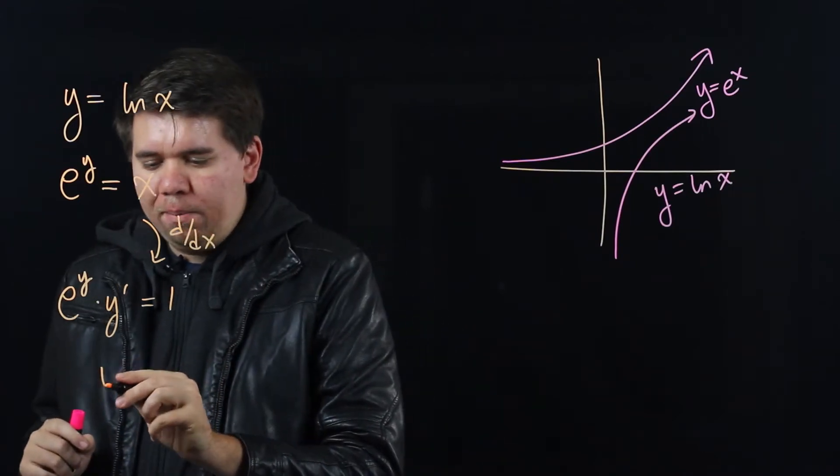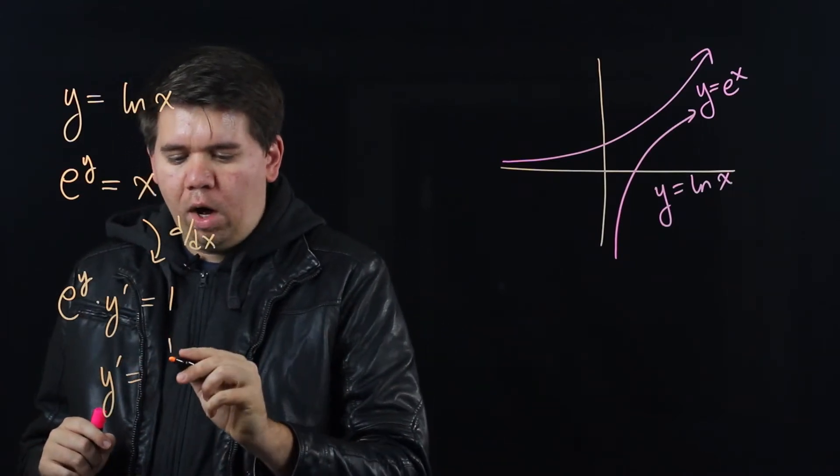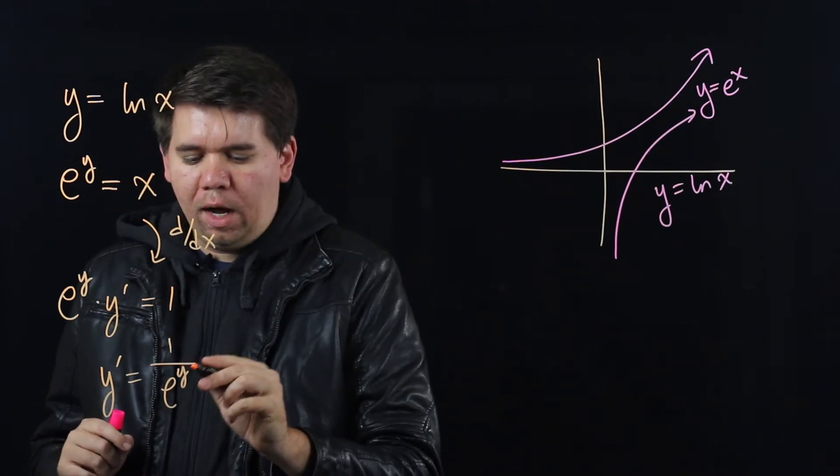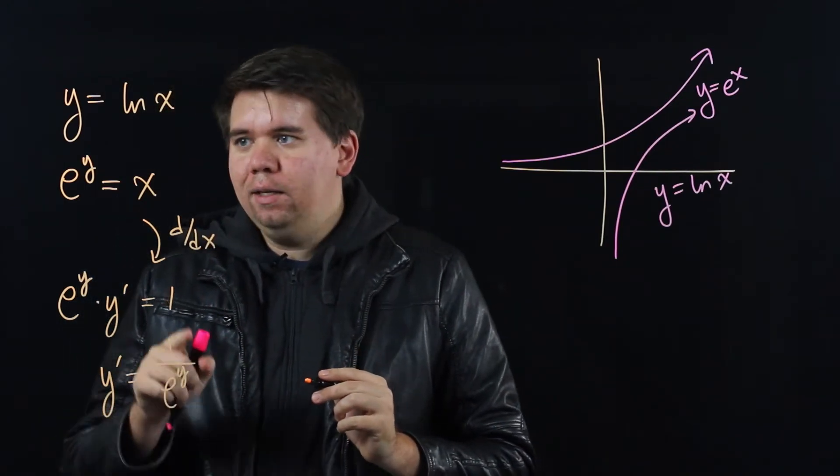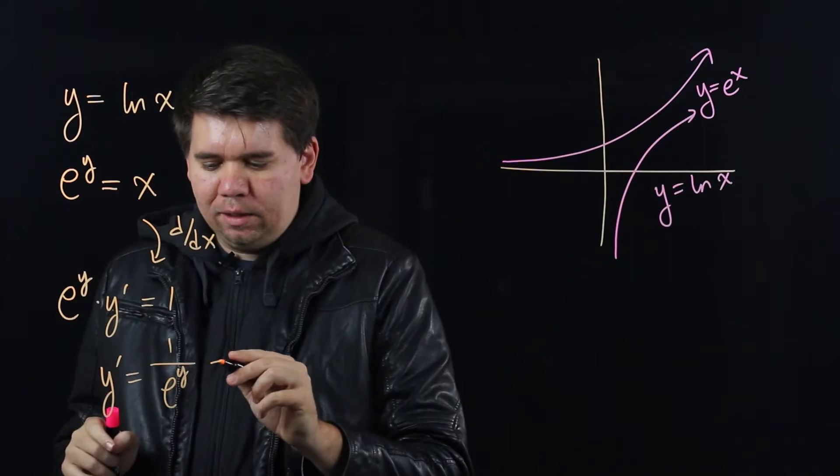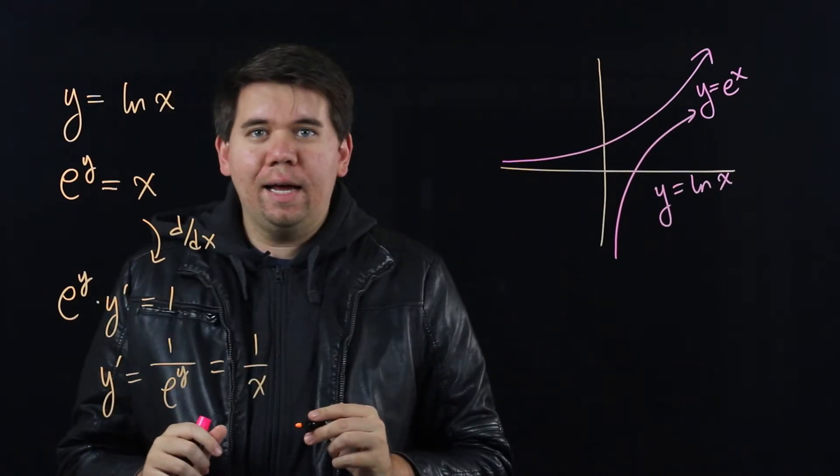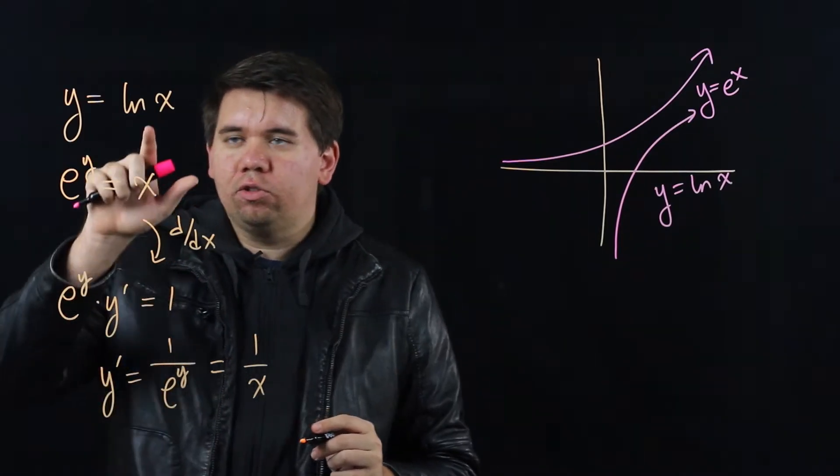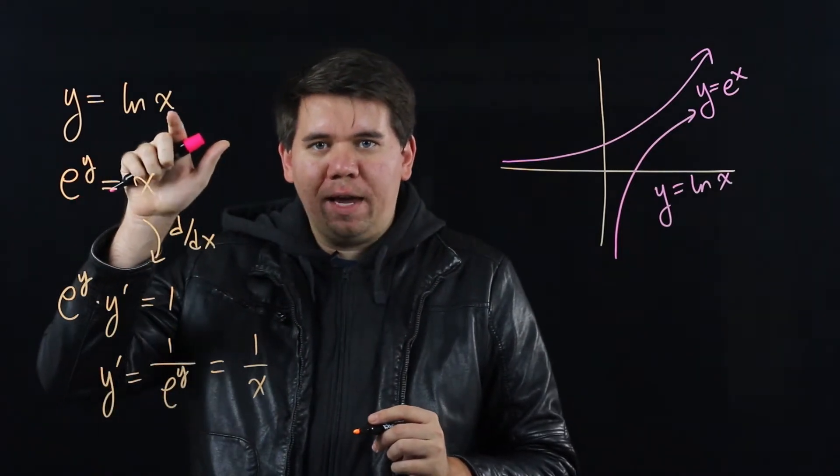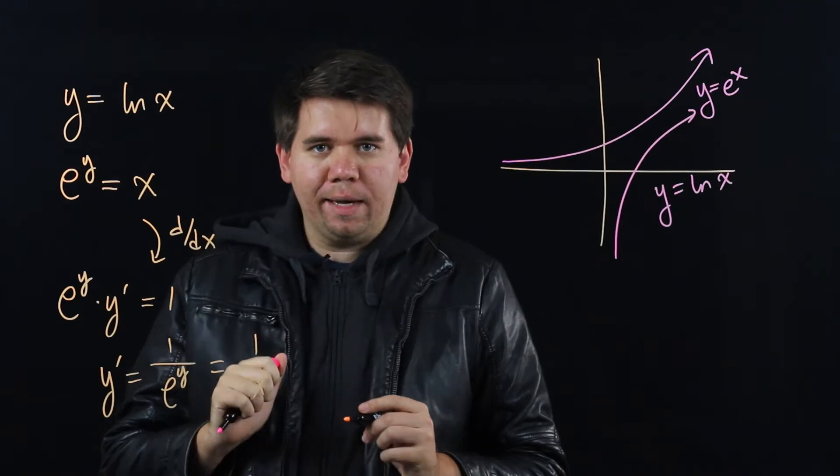Solving for y prime then gives you 1 over e to the y. But we just said that e to the y is x. So we have y prime is 1 over x. That is, we just showed that the derivative of the natural log of x is equal to 1 over x.